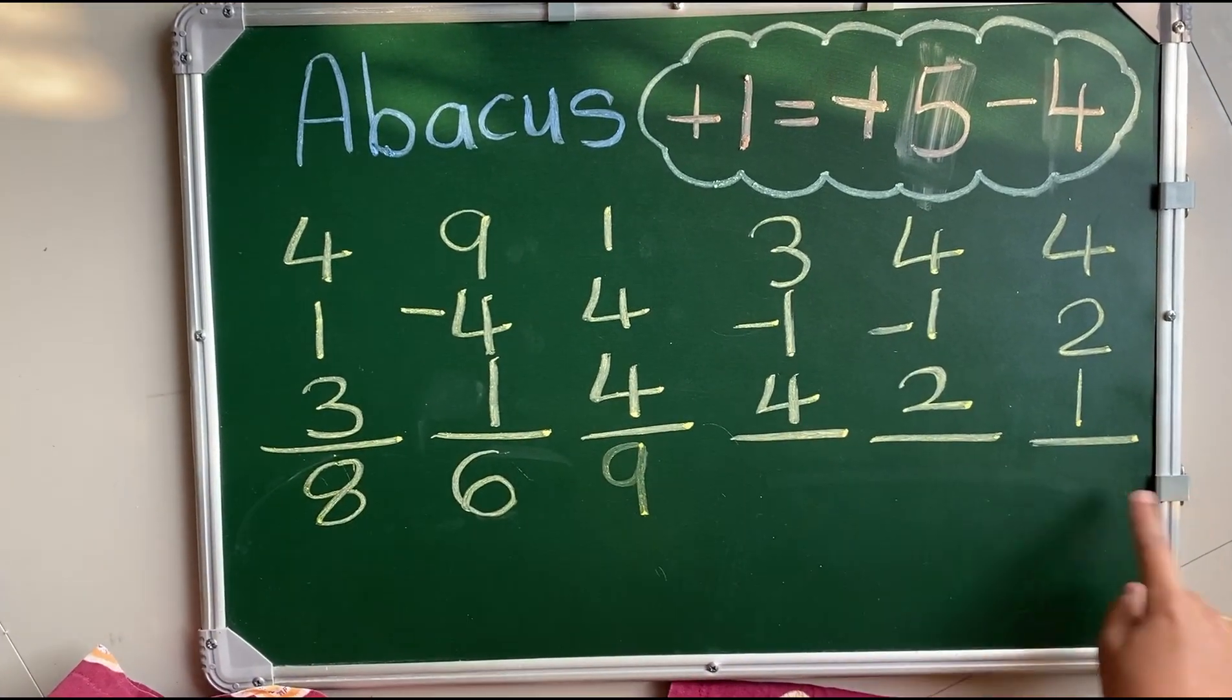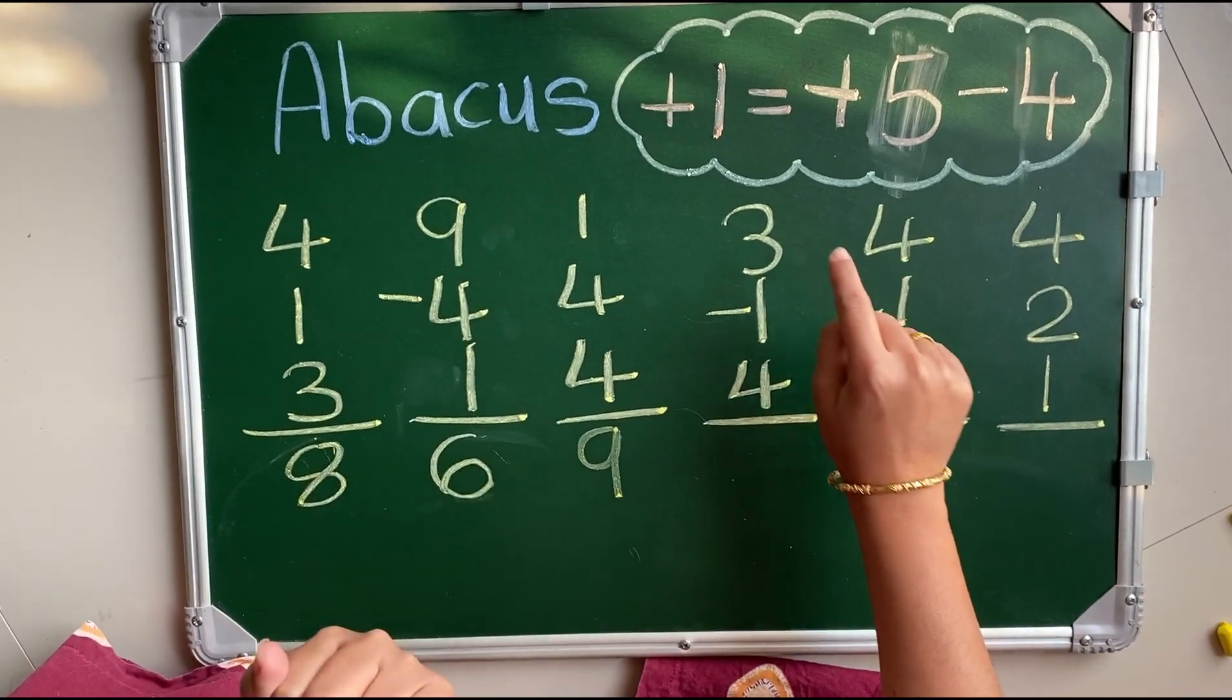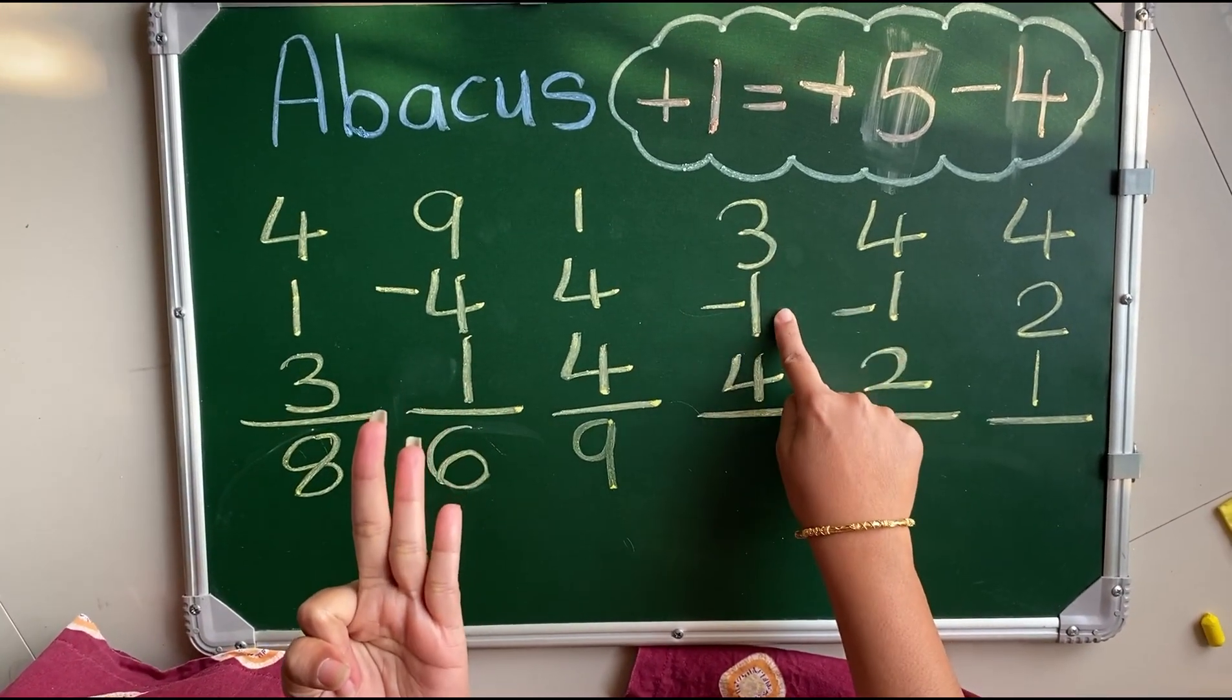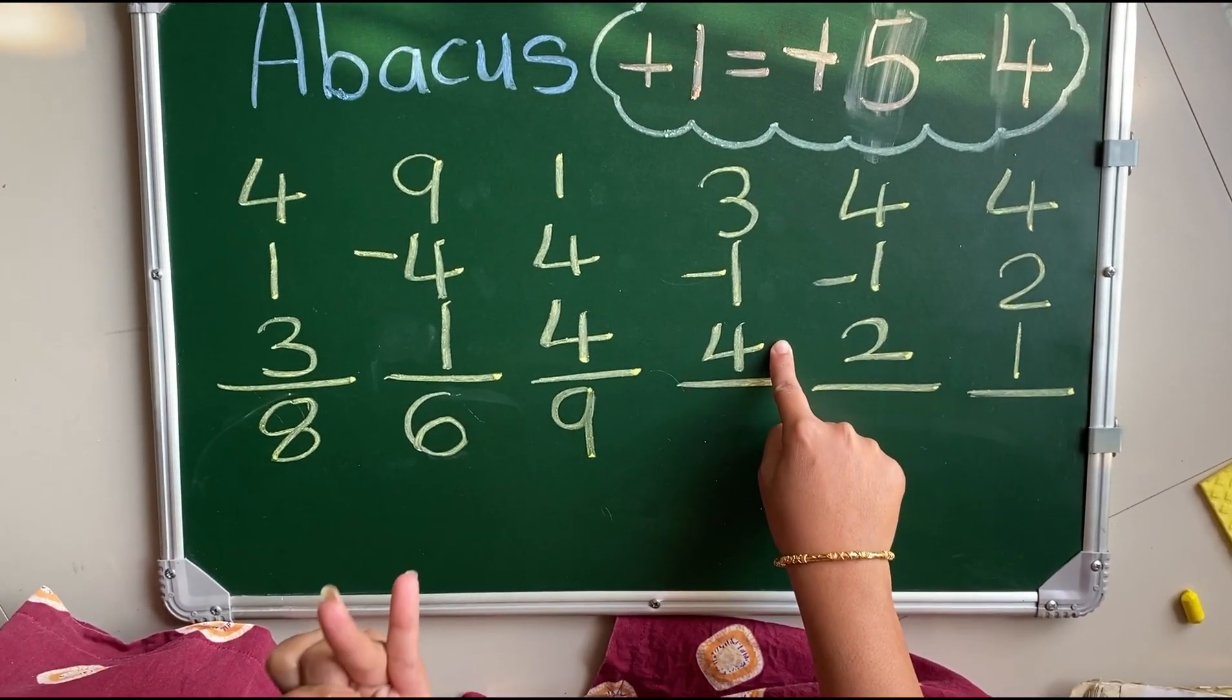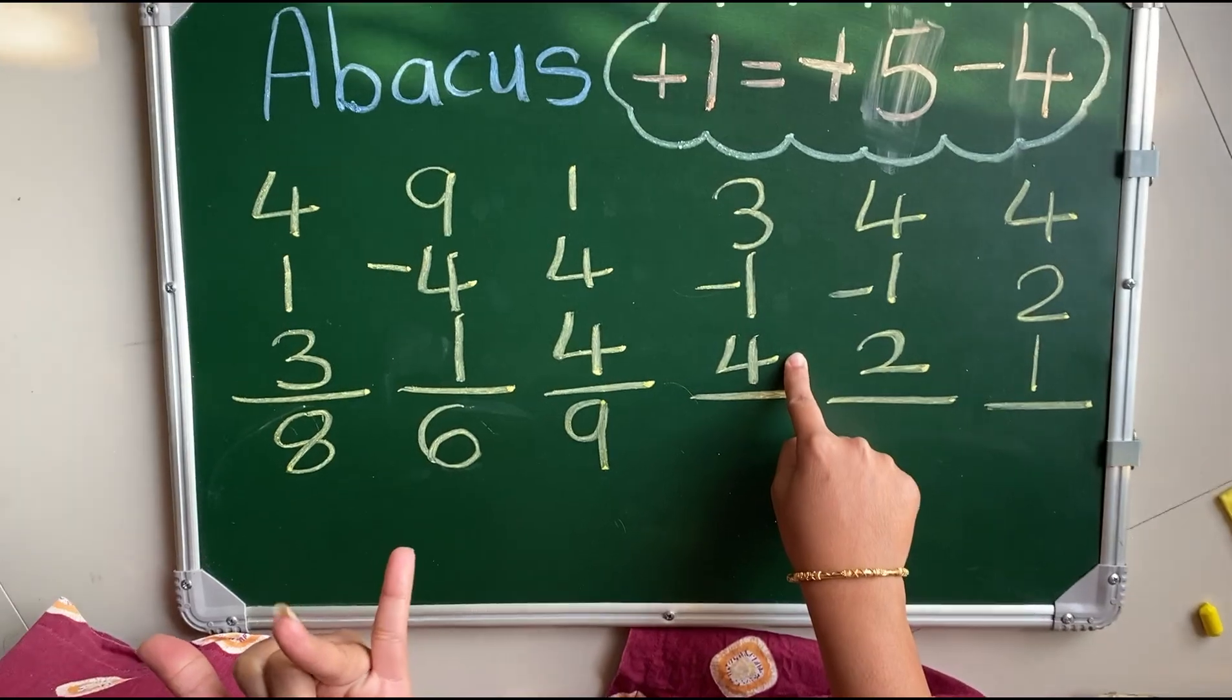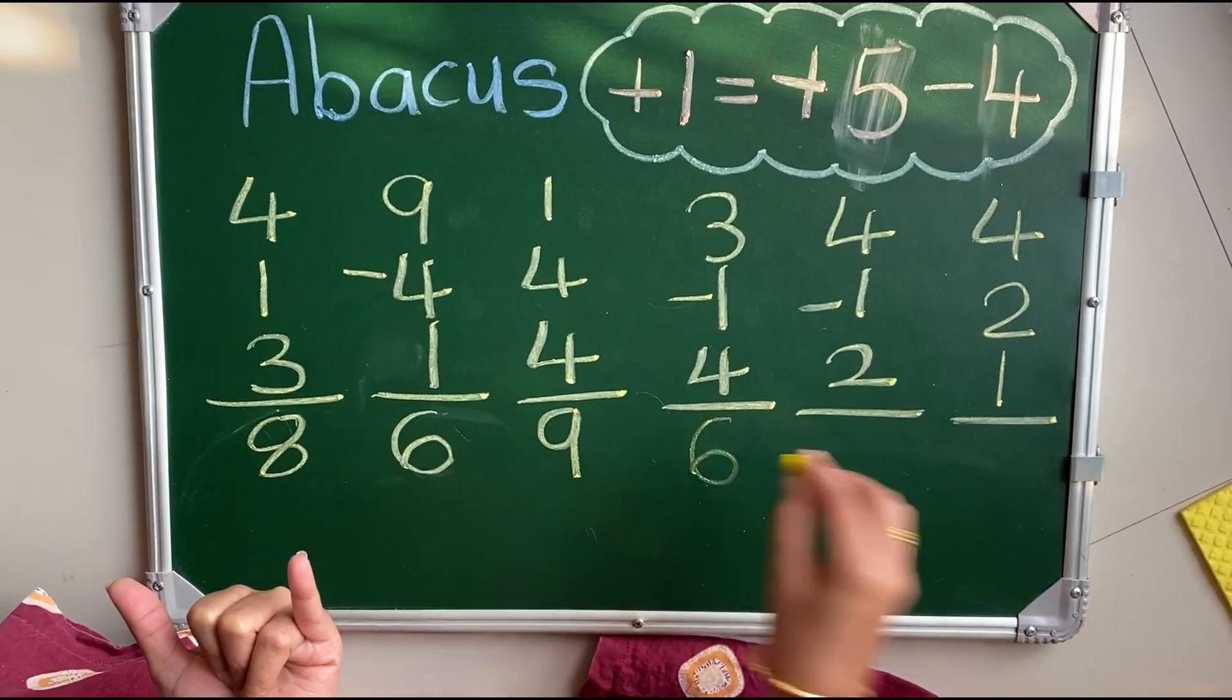For this sum we are going to use our hand. What is the first number? 3 minus 1 plus 4. For plus 4 what we will do? Plus 5 minus 1. Answer is 6.